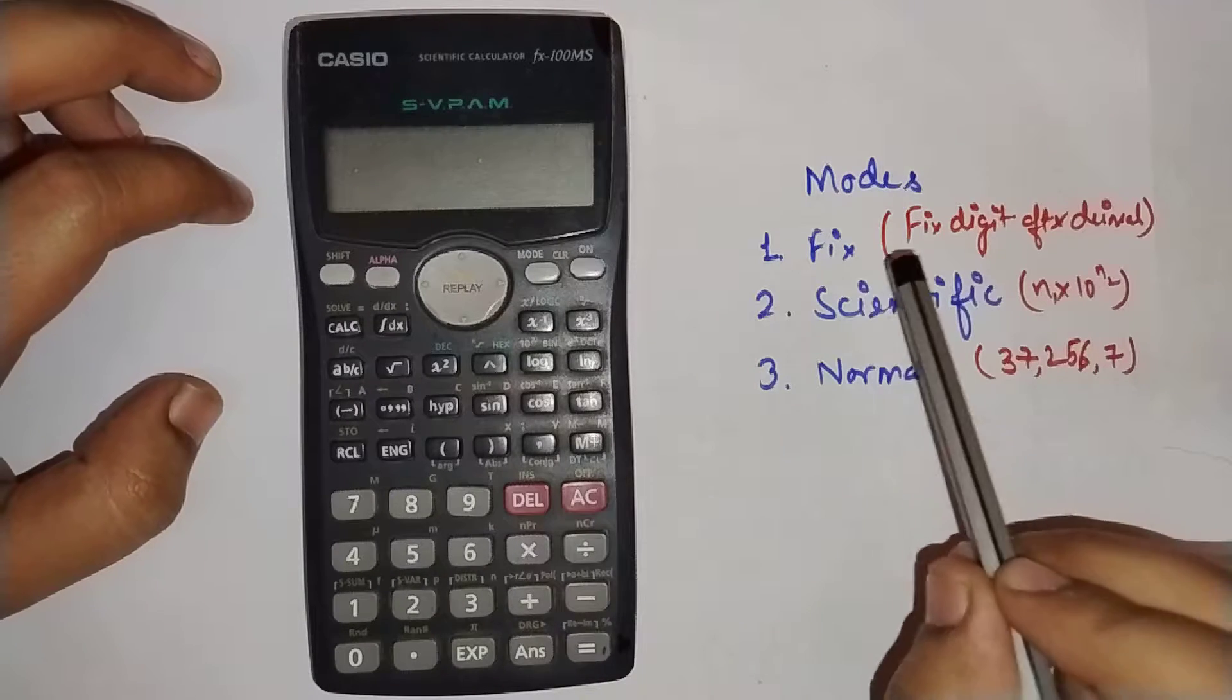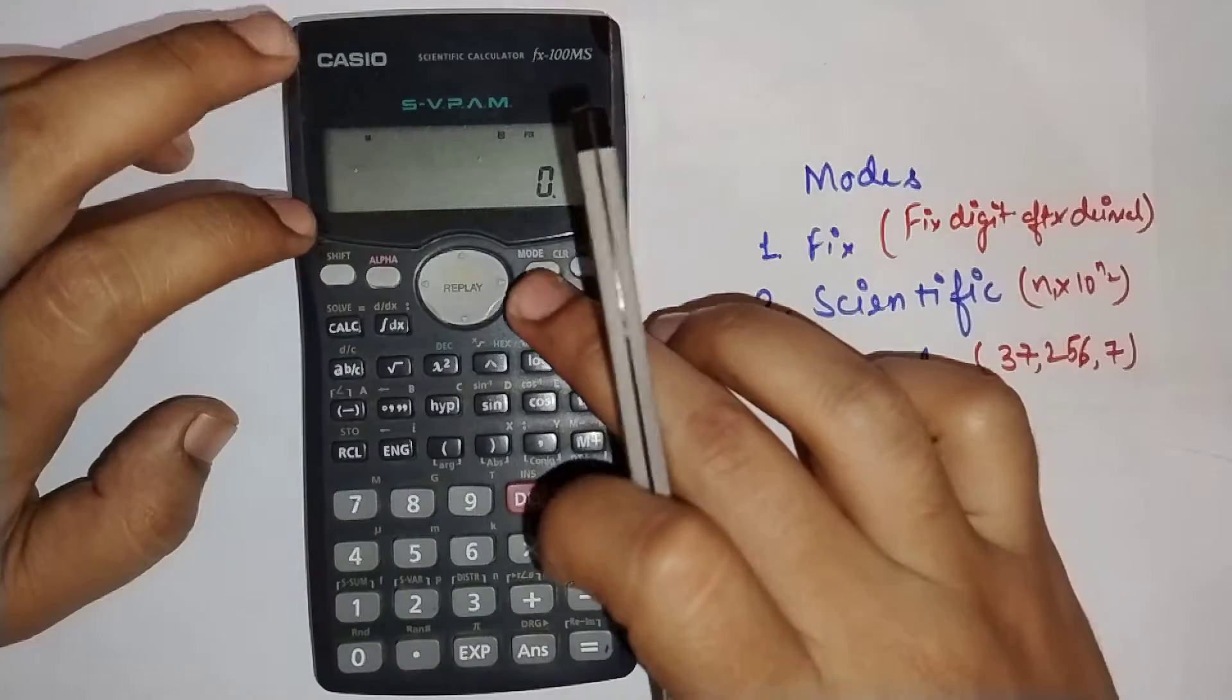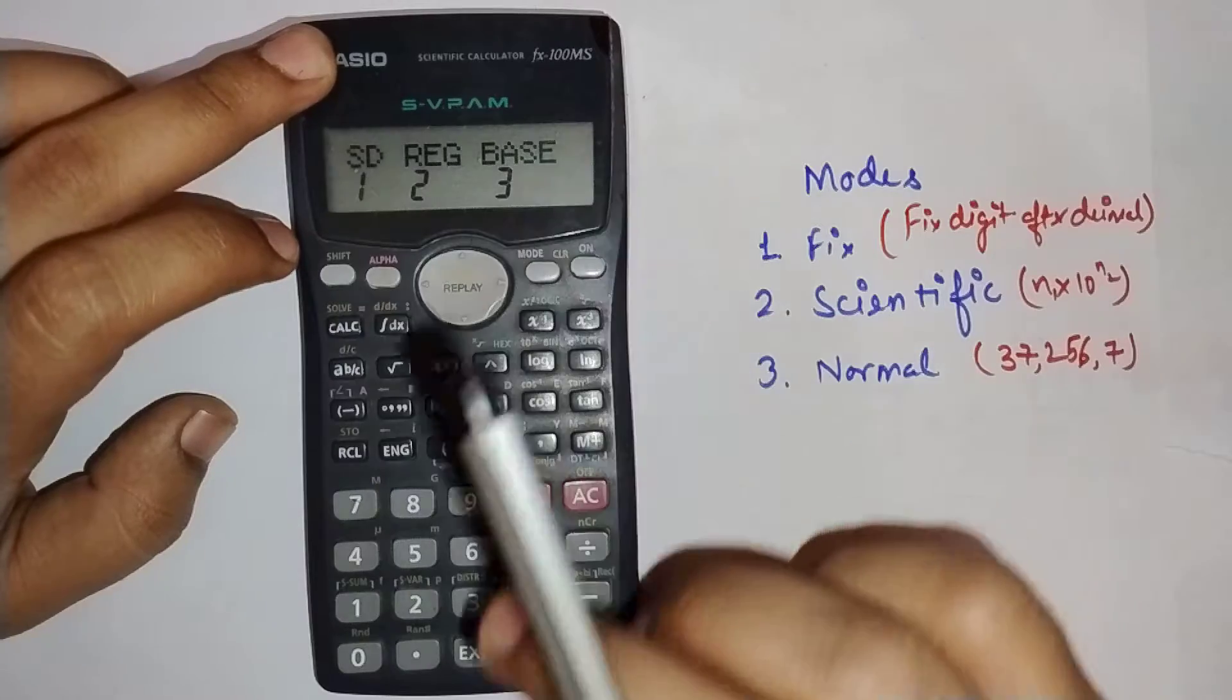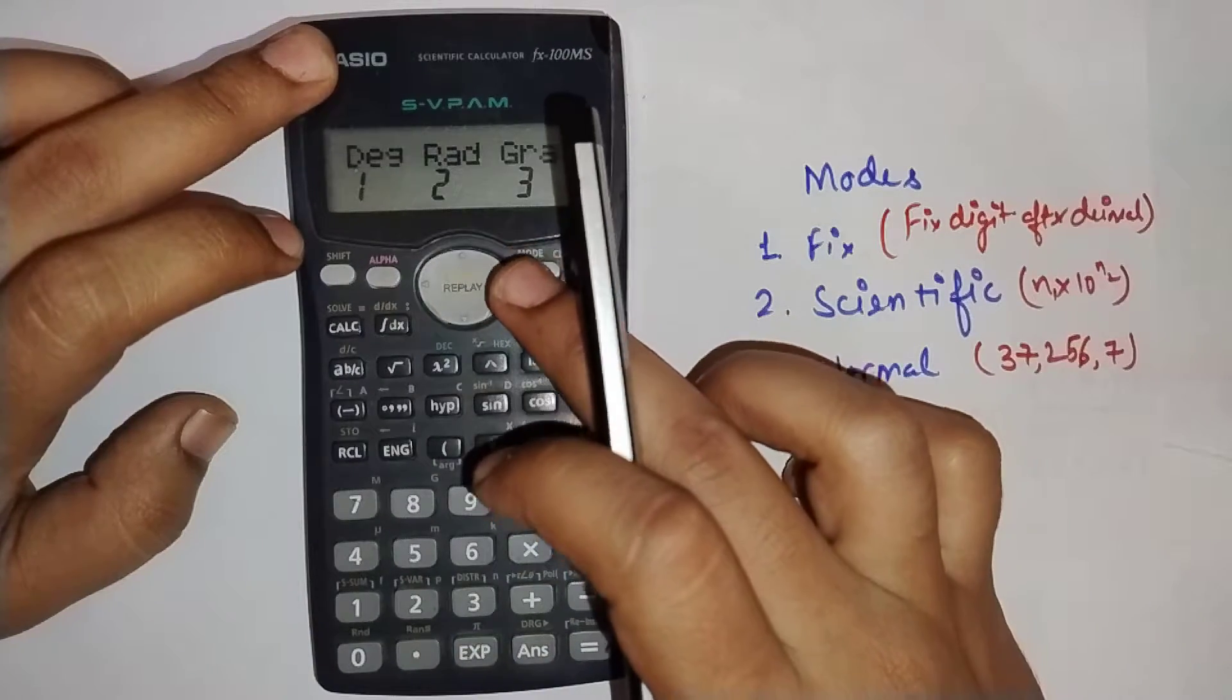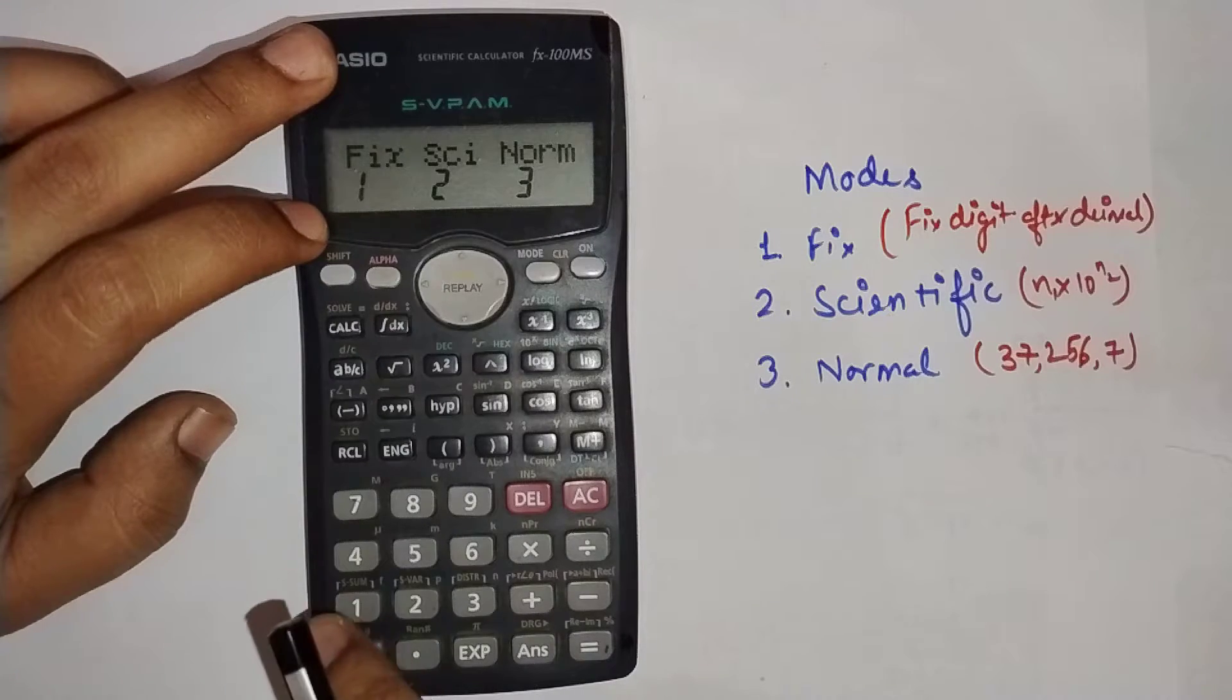Today we will see how to change the modes in calculator from fix to scientific to normal. Press mode, then press mode again, and again. Here you can see fix, scientific, and normal.